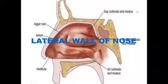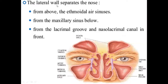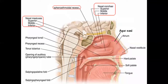Let us study about the lateral wall of the nose. The lateral wall is irregular due to the presence of shelf-like bony projections called conchae. These conchae increase the surface area for effective air conditioning of the inspired air. The lateral wall separates the nose from the orbit above by the intervening ethmoidal air sinus, the maxillary air sinus below and in front, and from the lacrimal groove and the nasolacrimal canal. The lateral wall is subdivided into an anterior part, middle part, and posterior part.